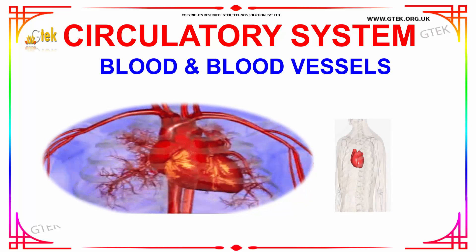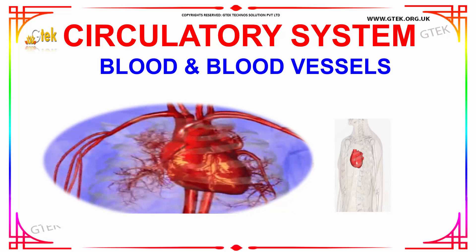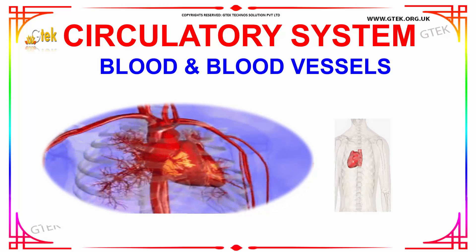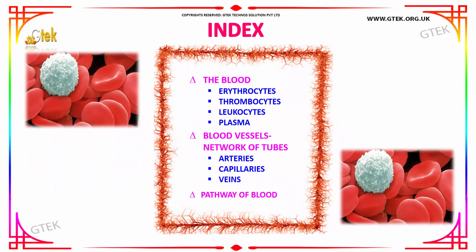Welcome to Gtech Techno Solution Private Limited. Today we are going to discuss blood and blood vessels in the human circulatory system. The topics we will cover include blood elements such as erythrocytes, thrombocytes, leukocytes, and plasma, as well as blood vessels — the network of tubes which includes arteries, capillaries, and veins.